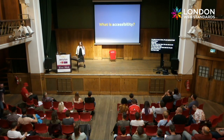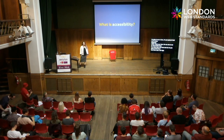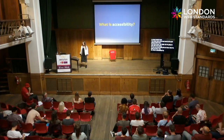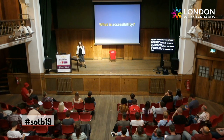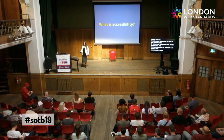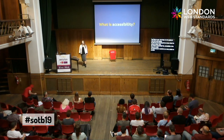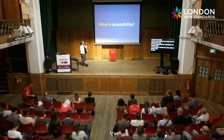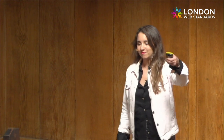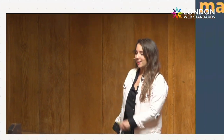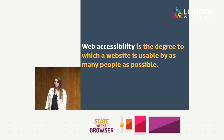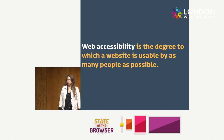I'm going to start with some basics so that we're all feeling like we know what I'm going on about. First off, what is accessibility? Accessibility is the degree to which an environment is usable by as many people as possible, which therefore means that web accessibility is the degree to which a website is usable by as many people as possible.